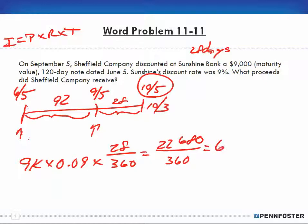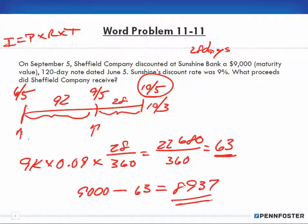Which gives me $63. Okay, and now to find out what the proceeds are, because remember that's the interest rate, and since we're discounting, we're taking the $9,000 and we're subtracting the $63, and that gives us $8,937 as our proceeds.